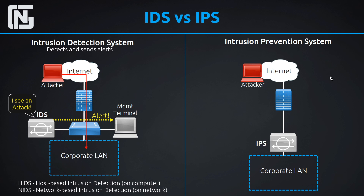So that's an IDS — but what's an IPS? It's got the word 'prevention' in it, so you can probably understand something else it does that the IDS doesn't. The IPS can do everything the IDS does as well. We can tell a difference in these diagrams by seeing that the IPS is normally placed inline behind the firewall, in between our firewall and our corporate network, as an extra layer of security before internet traffic can get into our LAN.